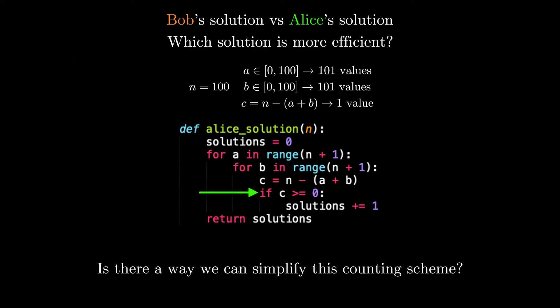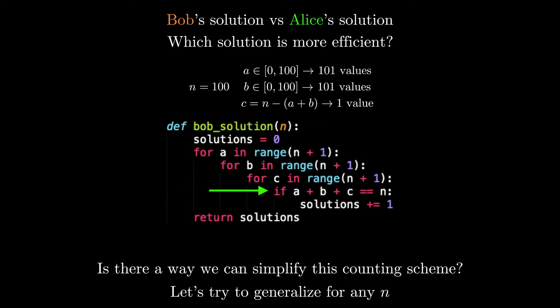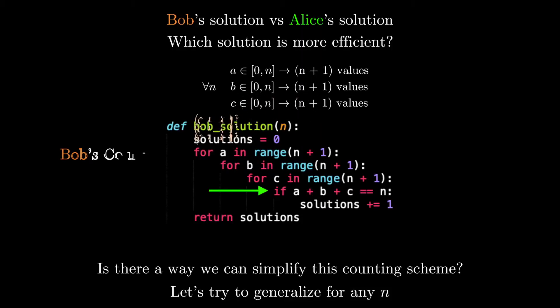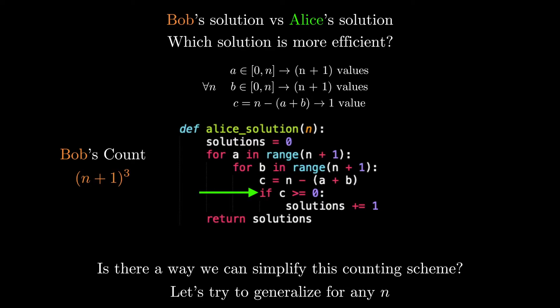So there's actually a pretty easy fix to this. Instead of figuring out the count for a specific n value, let's generalize to any n. So looking at the previous calculations for any n, Bob's algorithm is now going to iterate through n plus 1 a values, n plus 1 b values, and n plus 1 c values for a total of n plus 1 cubed times. Alice's algorithm similarly has a generalized count of n plus 1 squared, since we now only have one specific c value for each a and b value.